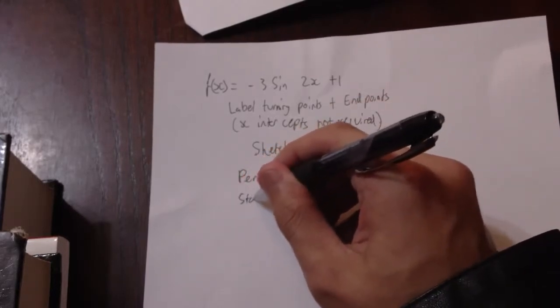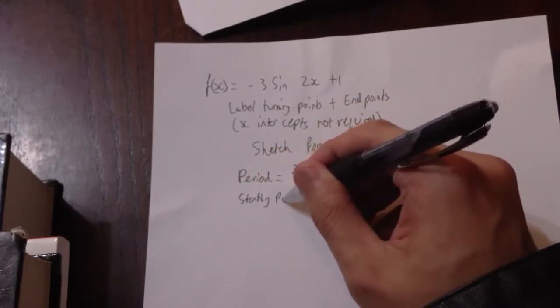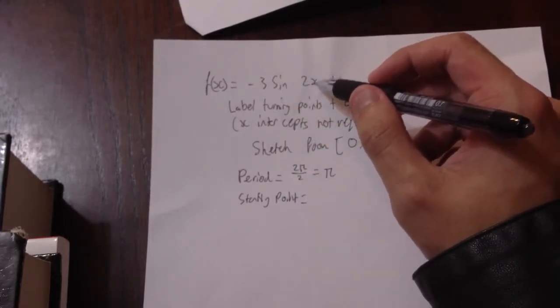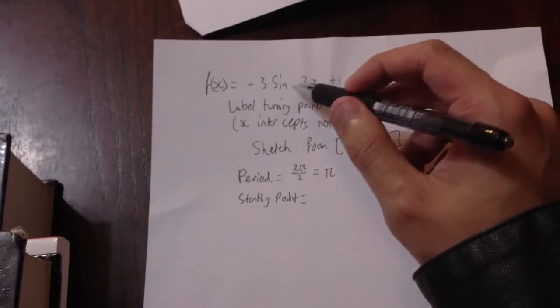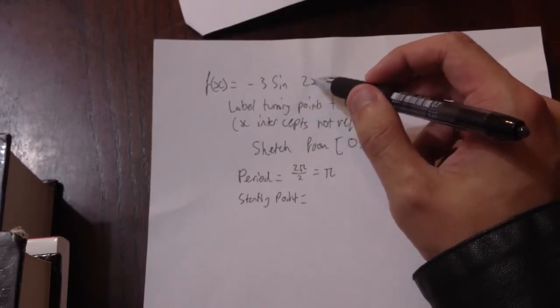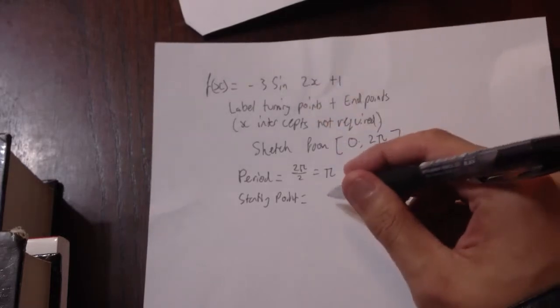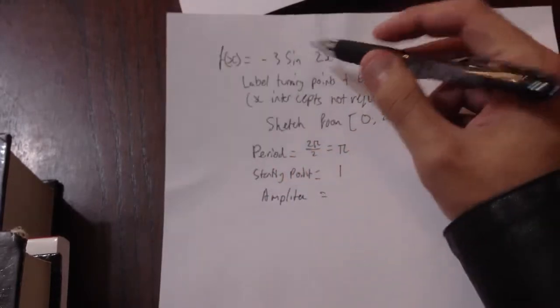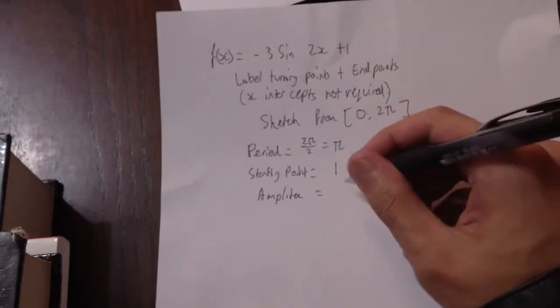What's the starting point? Well, the starting point is when x is 0. So we get sine of 0, which becomes 0. So the starting point equals 1. And the amplitude is the number in front of sine, which is 3.